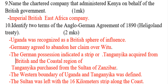The Berlin Conference solved territorial disputes so that European powers could know who would take which part of Africa. Question number nine: name the chartered company that administered Kenya on behalf of the British government. That one is the Imperial British East Africa Company, also known as IBEAC.